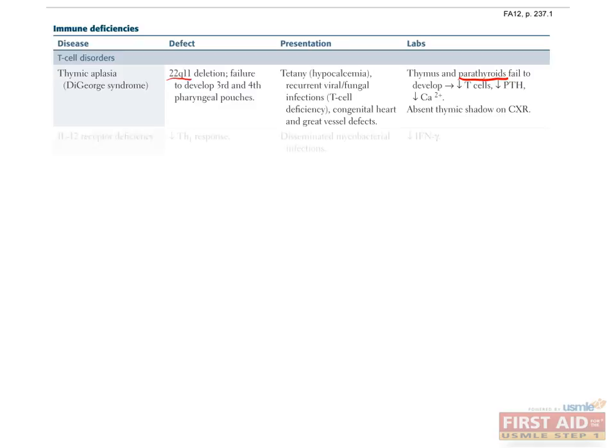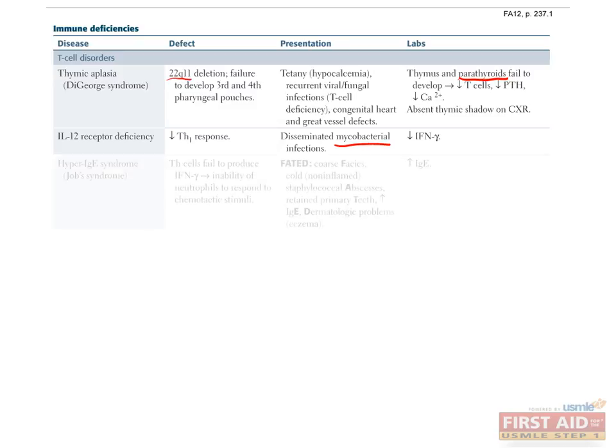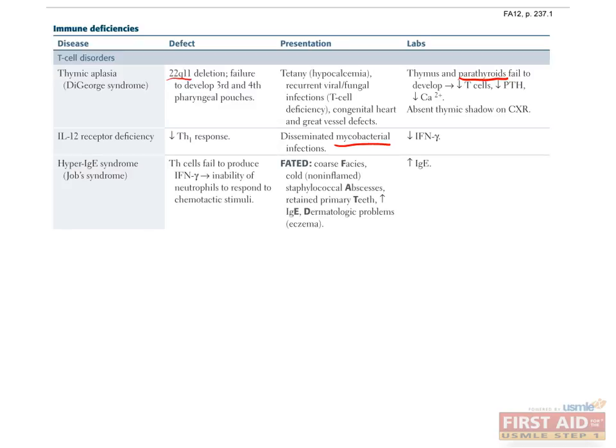IL-12 induces T cells to differentiate into Th1 cells. A deficiency in the receptor for IL-12 thus diminishes the Th1 response, which can lead to disseminated mycobacterial infections. Hyper-IgE syndrome, also known as Job's syndrome, arises when Th cells fail to produce interferon gamma, which ordinarily incites neutrophils to respond to chemotactic stimuli. Patients manifest characteristic coarse faces, non-inflamed staphylococcal abscesses, retained baby teeth, and eczema. IgE levels are elevated in this condition.